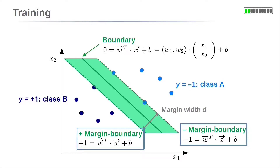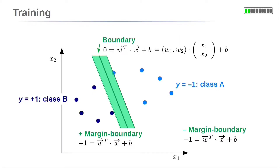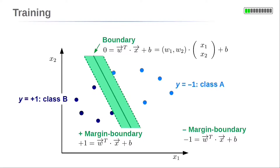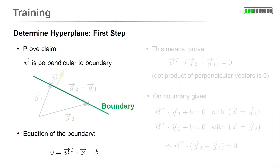We need a cost function which maximizes the margin width to find a separating boundary with a clear separation, as seen in the previous section. This means data points of different classes are as far as possible away from the separating boundary. The cost function is derived in three steps.